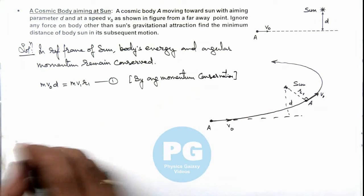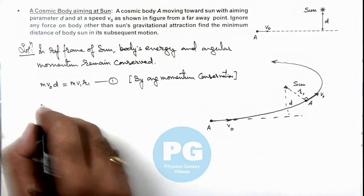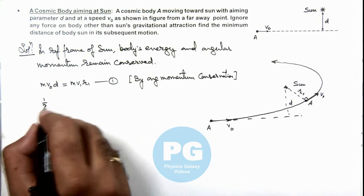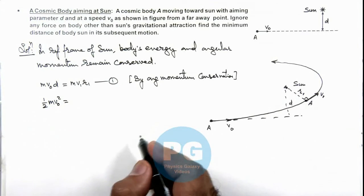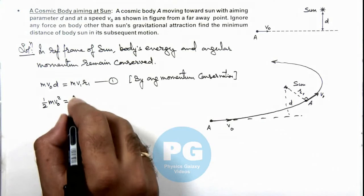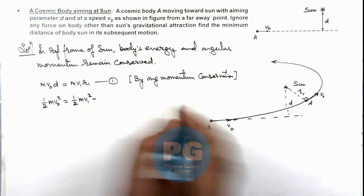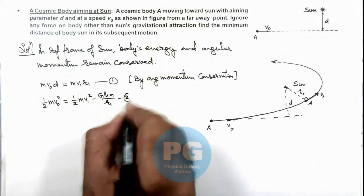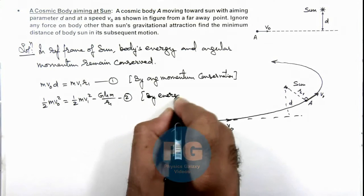And we can also conserve energy at this point and this point. We can say at far away point it only has kinetic energy half m v not square, because at far away point from sun we can neglect the gravitational potential energy. At the closest point its kinetic energy is half m v1 square minus the gravitational energy is G m M by r1, which is the second equation which we have written by energy conservation.